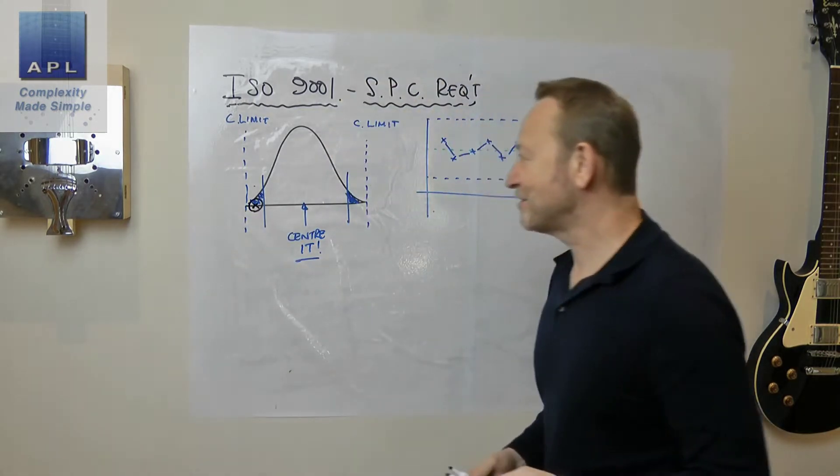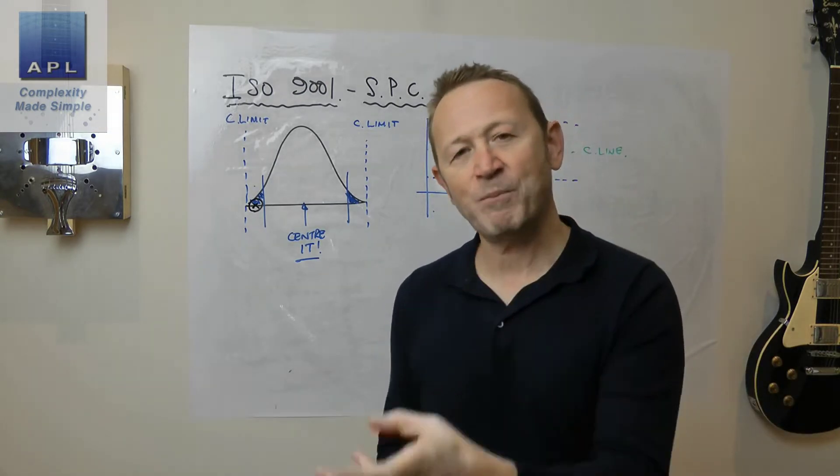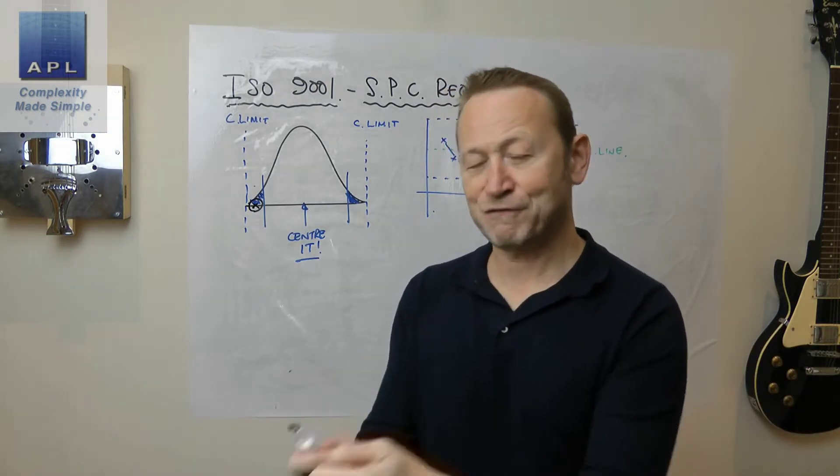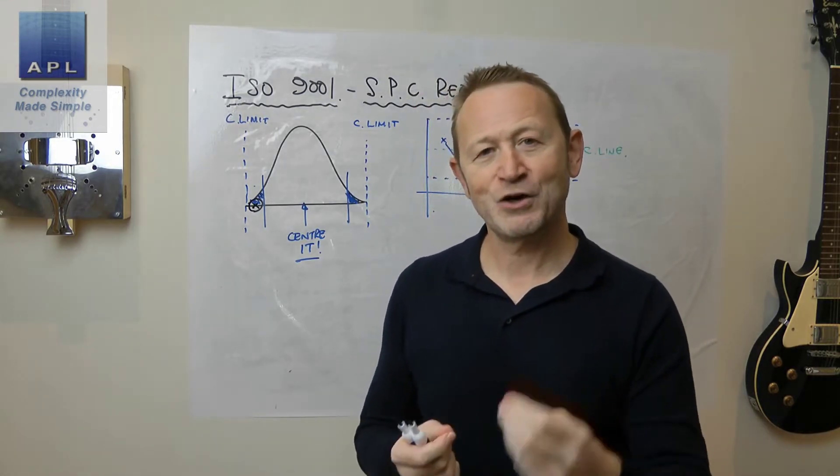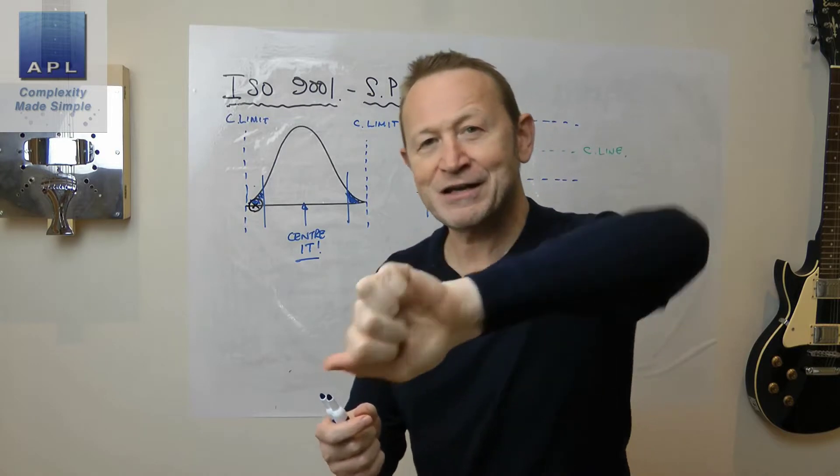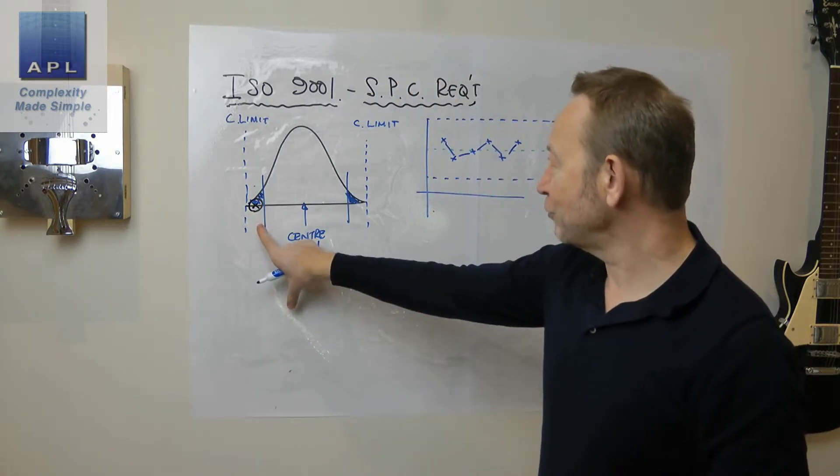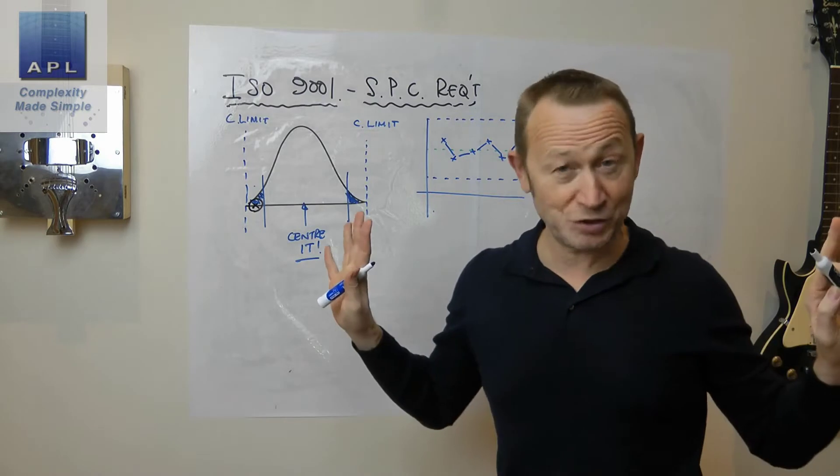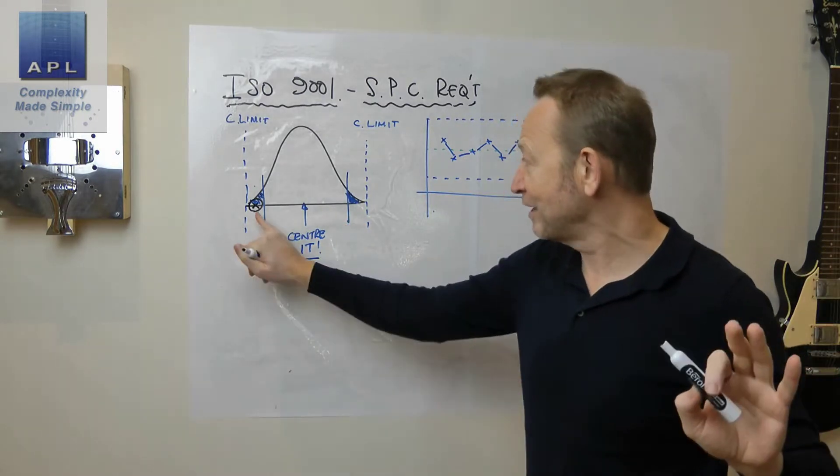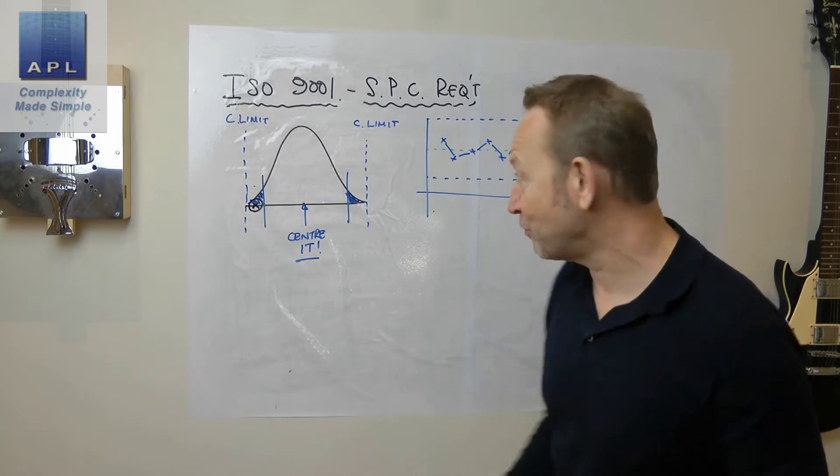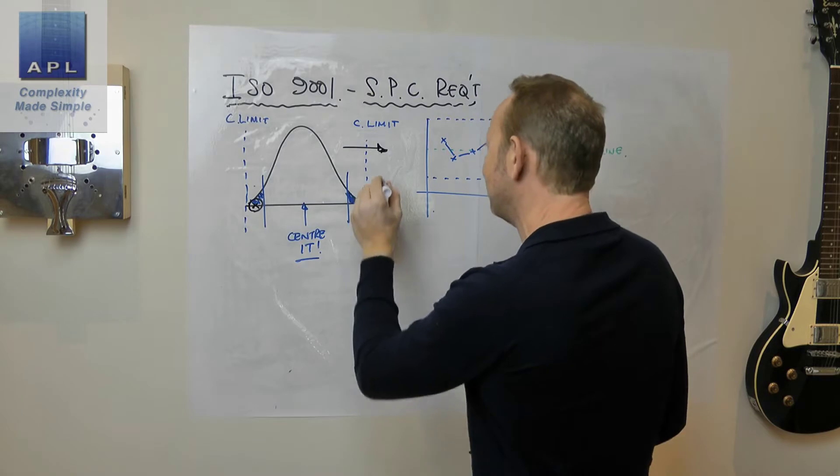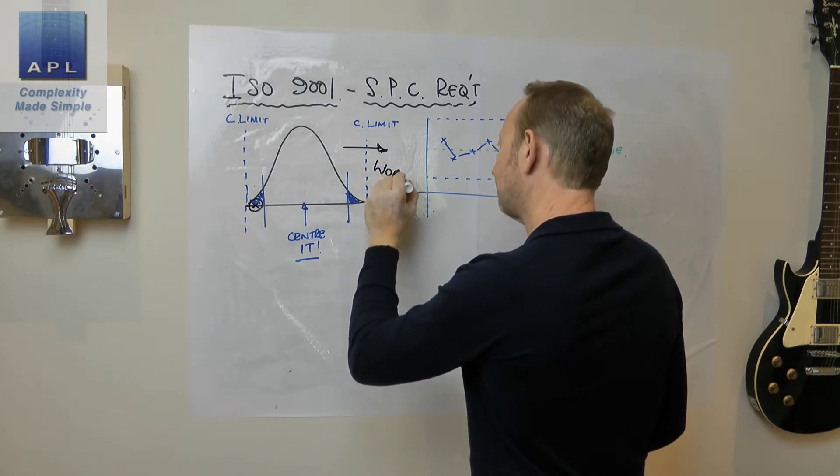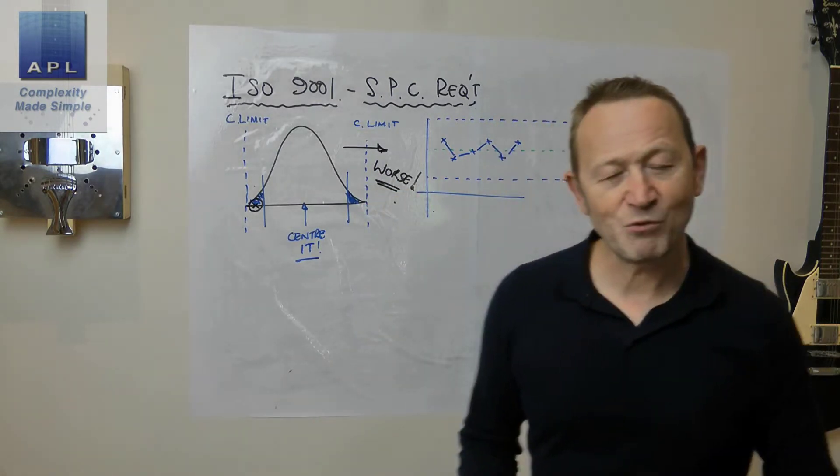Now normally when operators get data points that fall outside of the tolerance, what's their next behavior? Well, their next behavior is to adjust the process. Well if he adjusts this process which is perfectly set, by the way - he is achieving the minimum defect rate for this process - what will he do? He'll wind this process over here and he'll make it worse.